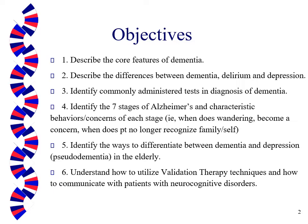A quick look at our objectives. We're going to look at the core features of dementia, describe the differences between dementia, delirium, and depression, identify commonly administered tests in the diagnosis of dementia, identify the seven stages of Alzheimer's and the characteristic behaviors and concerns of each stage, and identify ways to differentiate between dementia and depression — also called pseudo-dementia — in the elderly. We'll also understand how to utilize validation therapy techniques and how to communicate with patients with neurocognitive disorders.